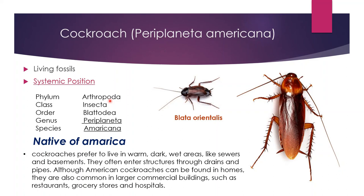ये आपको हर जगह देखने को मिल जाएंगे — घर में, store rooms में, या ऐसी जगहों पर जहाँ गंदगी हो या खाने का सामान मिलता हो। Cockroaches की लगभग 3500 species known हैं, जिनमें से 30 species ऐसी हैं जो human societies में, humans के आसपास survive करती हैं। उन्हीं में से एक है यह species, that is Periplaneta americana.